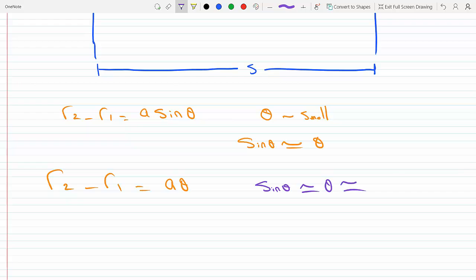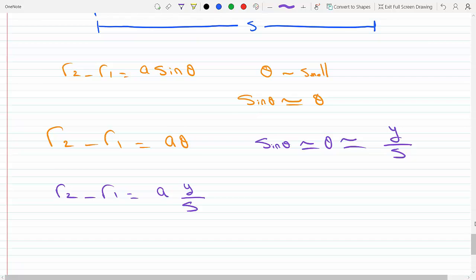So now plugging this back into the equation, I will get the path difference r2 minus r1 equals a times y over s. Now this path difference will equal an integer multiple of the wavelengths so that...